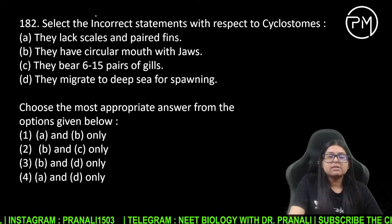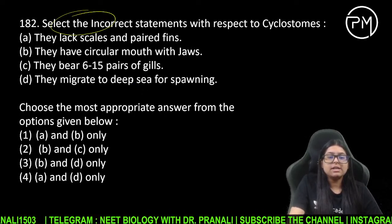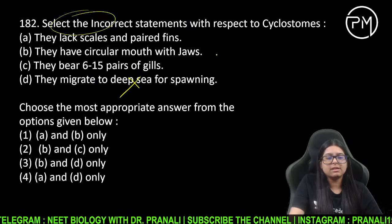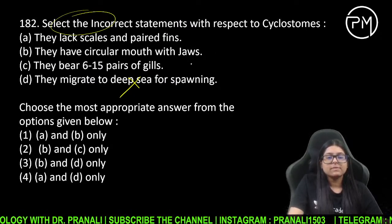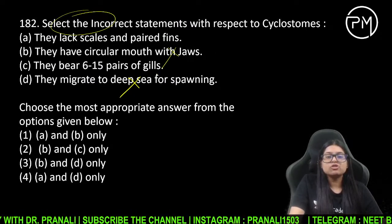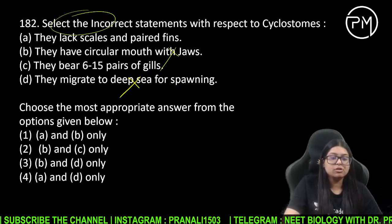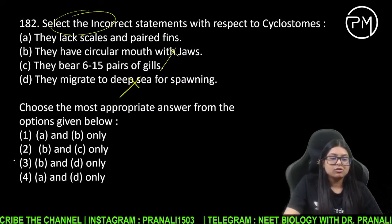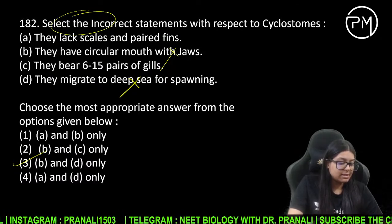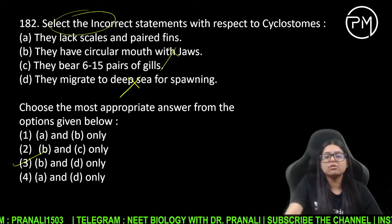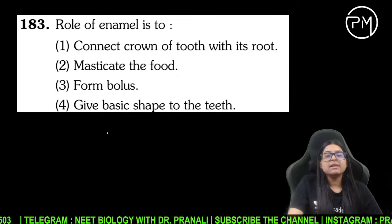Incorrect with cyclostomes — deep sea mein jaate hain kya spawning ke liye? Nahi. Toh D wala galat hona chahiye. Unke paas jaws hote hain kya? Nahi, unke paas jaws nahi hote. Toh B bhi incorrect hai. A aur C jo hain woh correct hain.